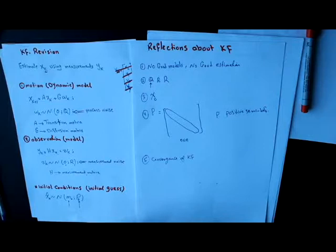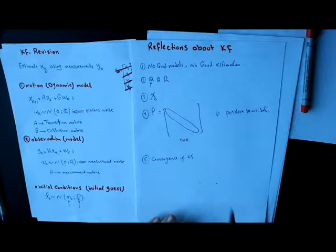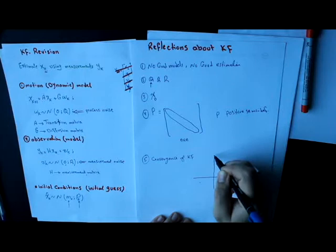The fifth point, convergence of Kalman filter. A nice thing about Kalman filter is that if we have good models, the filter must converge. So basically, its convergence can be described using this plot.